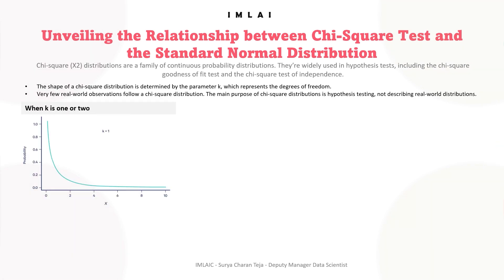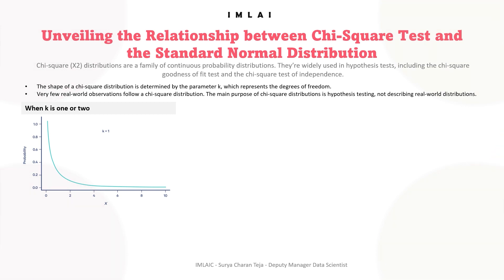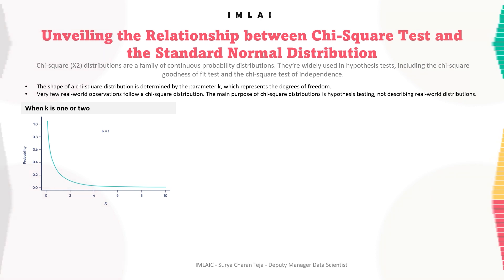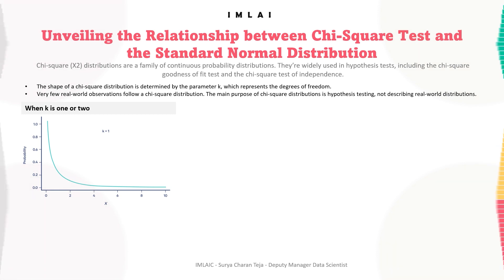Now imagine taking samples from two standard normal distributions Z1 and Z2. If each time you sampled a pair of values, squared them and added them together, you would have a chi-square distribution with k equals 2. More generally, if you sample from k independent standard normal distributions and then square and sum the values, you will produce a chi-square distribution with k degrees of freedom.